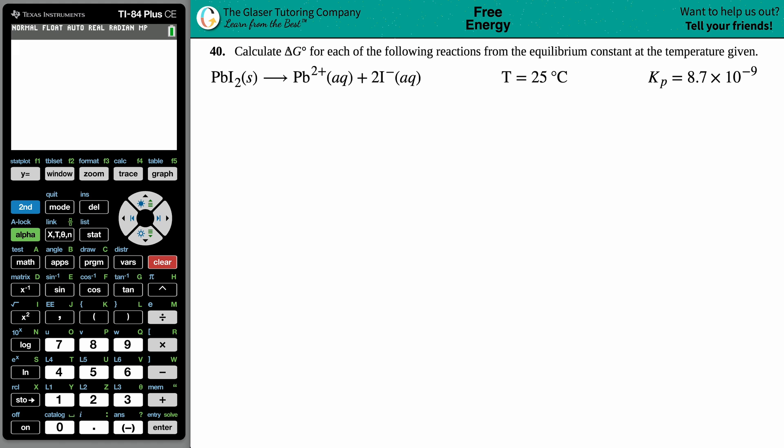Number 40: Calculate the ΔG° for each of the following reactions from the equilibrium constant at the temperature given. In this case we have PbI₂ solid, which will dissociate into Pb²⁺ aqueous plus 2I⁻. They give me the temperature of 25°C, that's room temperature, and they give me a Kp value of 8.7×10⁻⁹. We need to find that Gibbs free energy, the ΔG value.